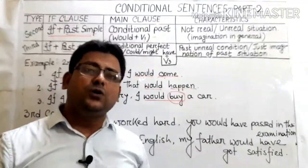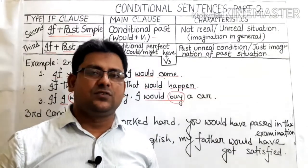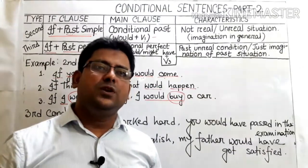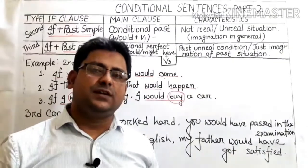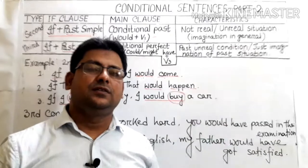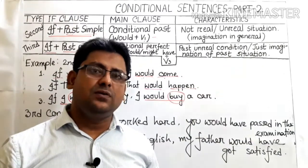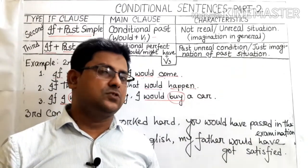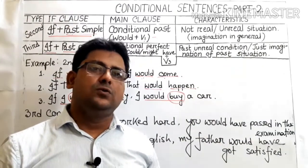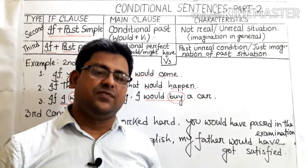So what we learned from the second conditional: the if-clause contains 'if' plus past simple, and the main clause contains 'would' plus the base form of the verb.